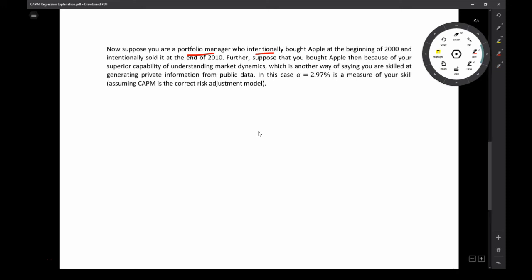I'm going to make the assumption that you bought Apple because of some superior skill in analyzing market dynamics. Another way to say that is that you have some skill at generating private information from public data. In my class, one of the things I make a big deal out of is that private information, generating private information is the source of alpha. Anyhow, so in the case of Apple, the alpha during this time period was 2.97. And I'm making the assumption that the manager intentionally bought it in 2000 and intentionally sold it in 2010. Well, in this case, alpha is going to be our measure of skill. It's going to be our measure of excess return over this time period that is not associated with systematic risk.